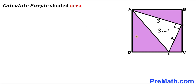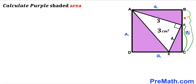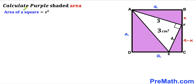We are dealing with square ABCD. Let's label its side length as lowercase a, so all four sides equal a. I'll label segment BF as lowercase x. Then segment FC equals the whole side BC minus BF, which is a minus x. Applying the area of a square formula — area equals s² — the area of square ABCD is a².